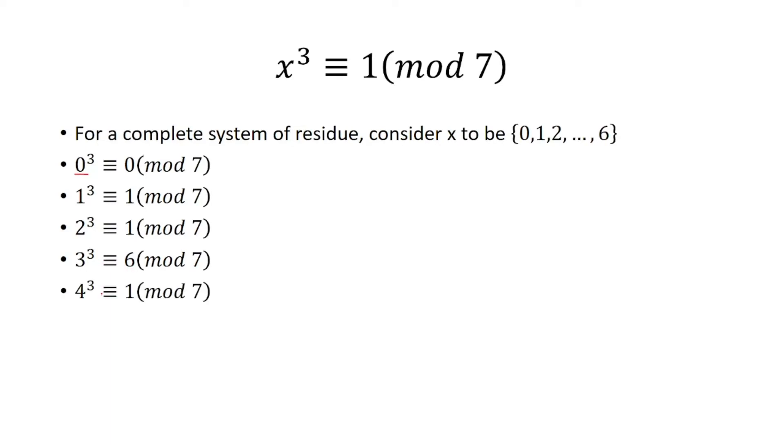4 cubed is 64, and that leaves me a remainder of 1 when I divide it by 7.